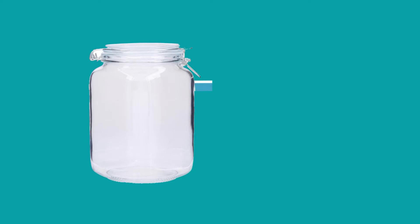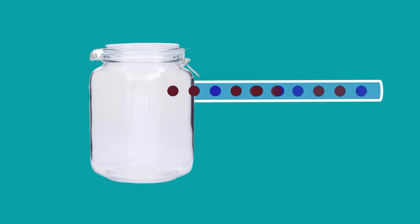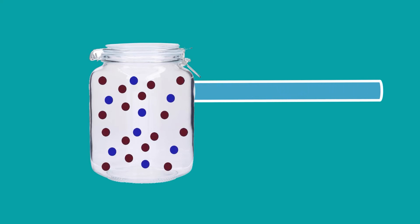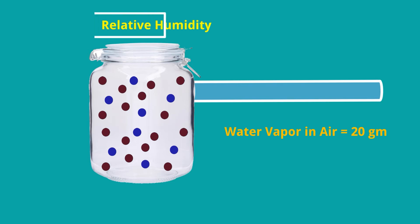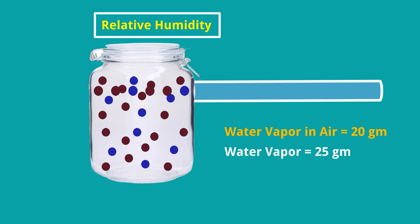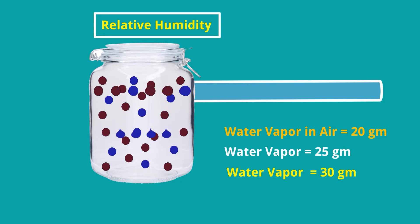Let's explain it more clearly. We have an enclosed container and we are putting gas and moisture into it. The water vapor in the air is 20 grams and we need to find the relative humidity. We supply more moisture — the water vapor increases to 25 grams. We supply more and it rises to 30 grams. If we add more, the air cannot hold it and the excess moisture forms water droplets collected at the bottom.